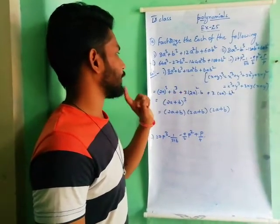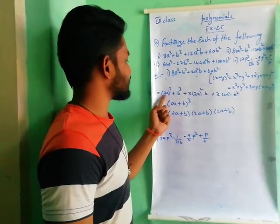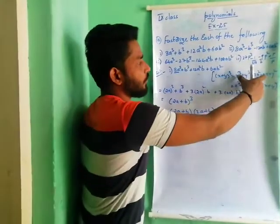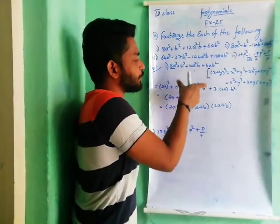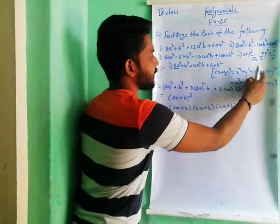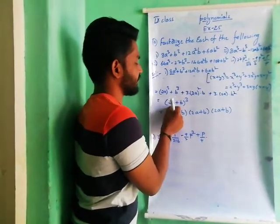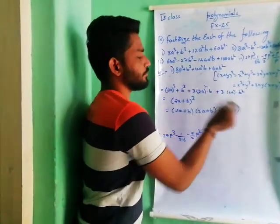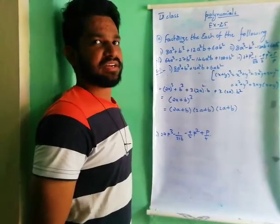b cube is b cube. Then 3 into (2a) whole square — that is the 3x square term — plus 3 into (2a) times y square. In a similar way, it looks like (a + b) whole cube, so the answer is (a + b) into (a + b) into (a + b).